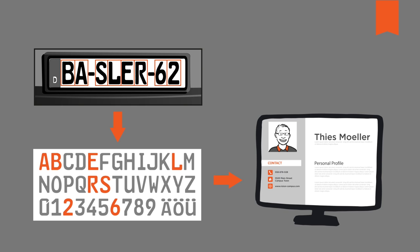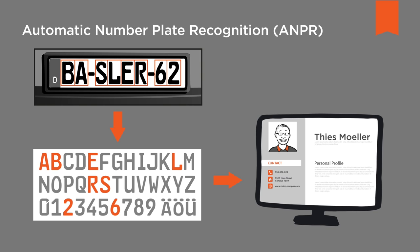A popular example for OCR is automatic number plate recognition, also known as ANPR. Each of these processing techniques covers a wide spectrum of machine vision applications, but combining them can give you even more possibilities.